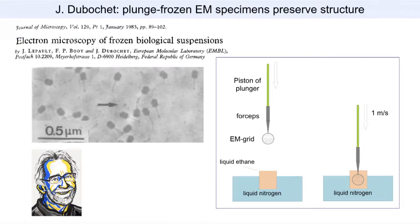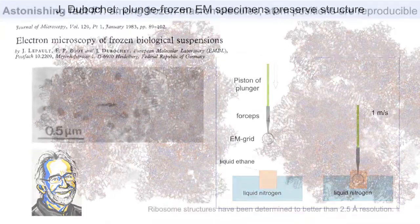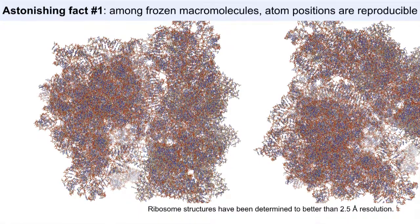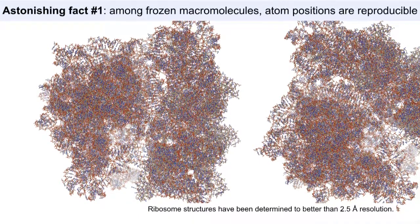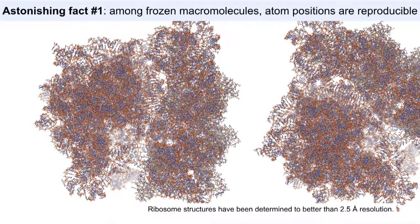And for me, the astonishing phenomenon in these frozen specimens is this: that a large macromolecule, for example, something the size of a ribosome, has from one copy to another the positions of individual atoms consistent within something on the order of one angstrom unit.